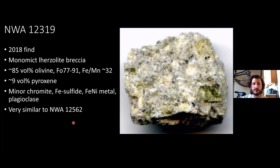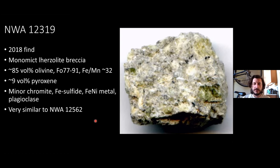NWA 11319 is a 2018 find — a monomict lherzolite breccia, around 85 volume percent olivine, similar forsterite content Fo77–91, similar Fe/Mn around 9.1% pyroxene, and the same group of minor phases. This meteorite is very similar to 12562 — likely all three are paired, but in particular these two are almost identical. If you showed me probe mounts of both, I wouldn't be able to tell which was which.